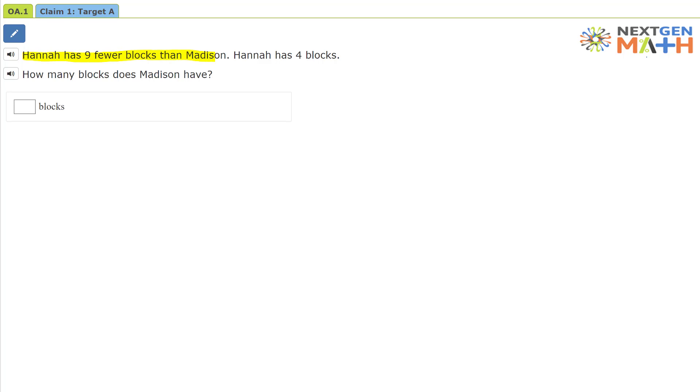Hannah has nine fewer blocks than Madison. Hannah has four blocks. How many blocks does Madison have?